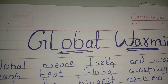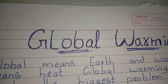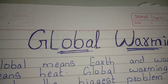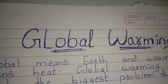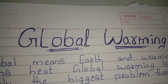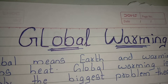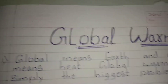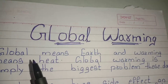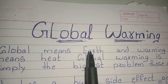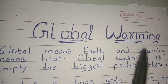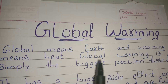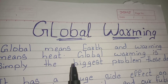Hello friends, welcome back to Triyankush Learning Channel. In this video we are going to discuss an essay on global warming, or 12 lines on global warming. So let's start. Global means earth and warming means heat — global warming is simply the biggest problem these days.